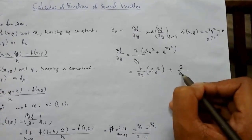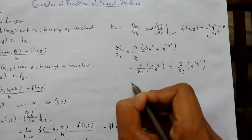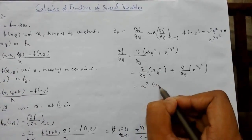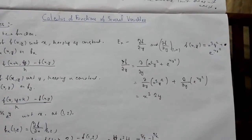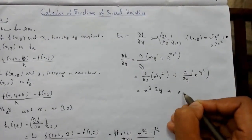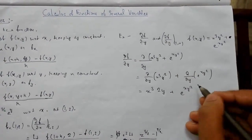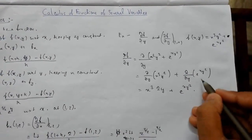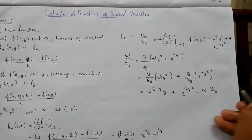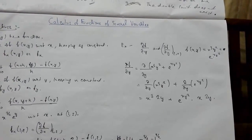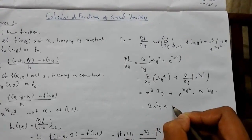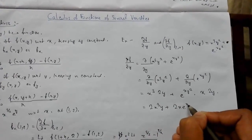Separating the terms, x is treated as constant. The partial derivative of x³y² with respect to y gives 2x³y. For the term e^(xy²), using the chain rule, the partial derivative of xy² with respect to y is 2xy. So the result is 2x³y + 2xy · e^(xy²).